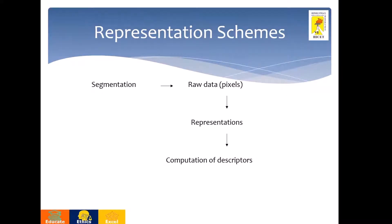Image representation and description helps you to recognize objects effectively by the computer. The image which has to be recognized by the computer has to be acquired first, then enhanced, restored, and segmented. The segmentation output will be in the form of raw pixel data, which is not understandable by the computer. So it has to be converted into a form which is understandable by the computer, and that work is done by representation and description.